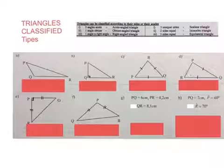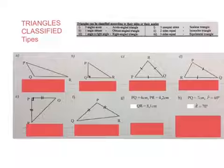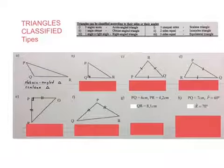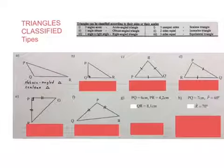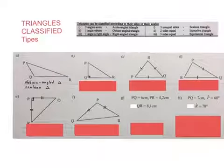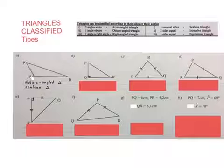Here we have eight triangles. Let us see if we can classify them quickly. This first one is an obtuse angled triangle. It can also be called a scalene triangle because all three of the sides are different lengths.